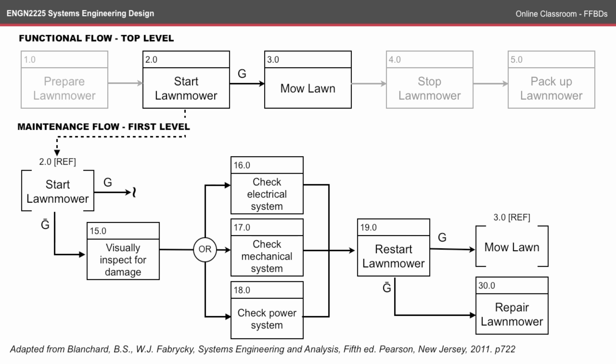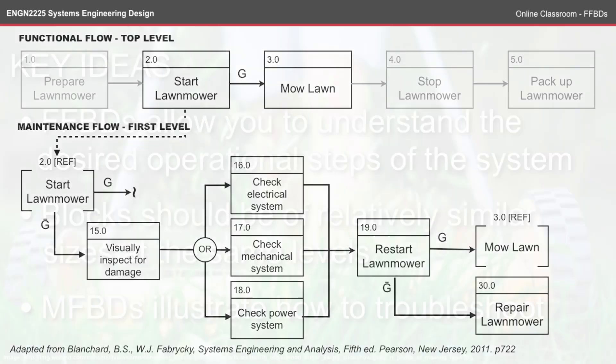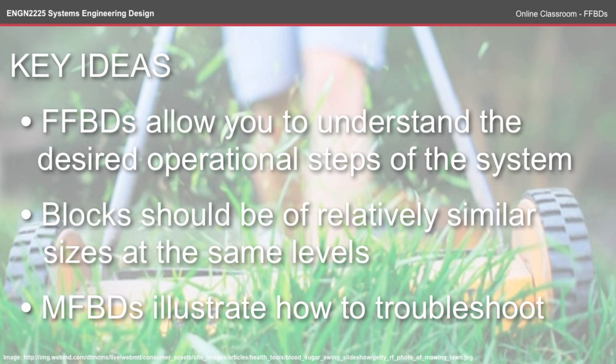A couple of key ideas from the Functional Flow Block Online Classroom: FFBDs allow you to understand the desired operational steps of a system and also procedures for undesired operational steps. Blocks at the same level should be of relatively similar size, so you're not mixing large sub-procedures with simple steps at the same level. Maintenance flow block diagrams illustrate how to troubleshoot a problem if one arises. Be sure to check out the reading for this topic and complete the self-test.